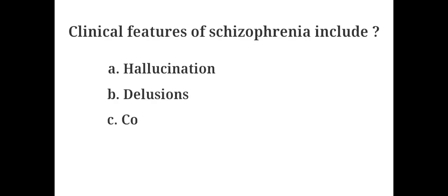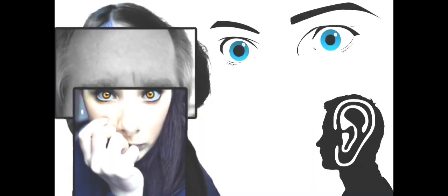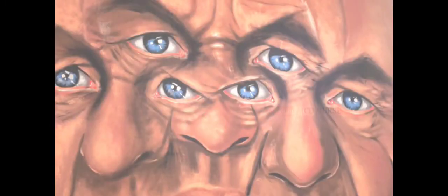Clinical features of schizophrenia include: A. Hallucination, B. Delusions, C. Confused thoughts, D. All. The answer is D. All. People with schizophrenia hear, see, smell and feel things which no one else does. They believe in things that are not true and have confusing thoughts, trouble concentrating and other symptoms.